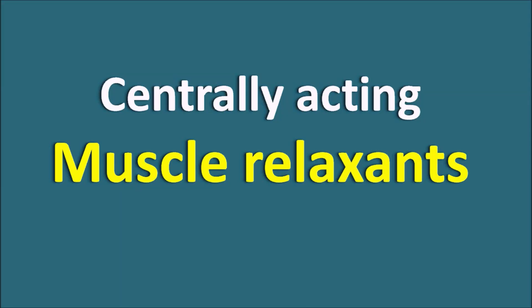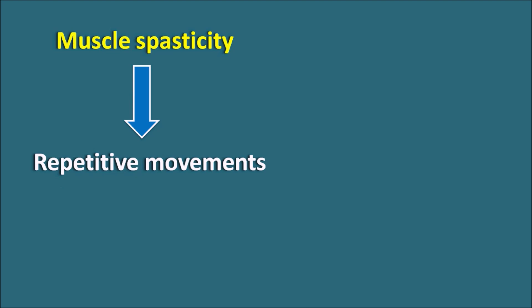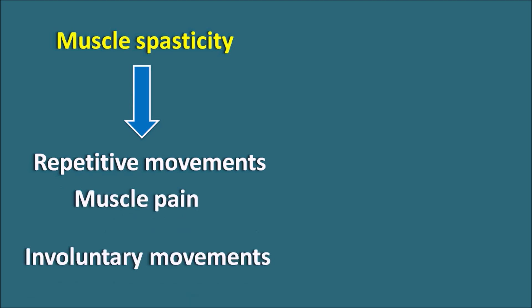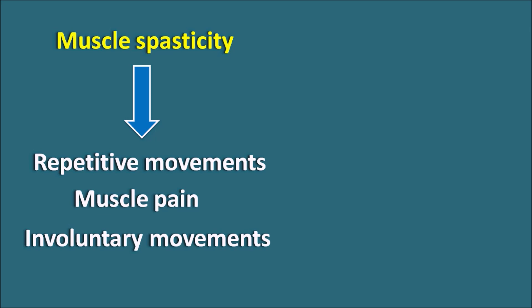Today we are going to discuss centrally acting muscle relaxants. Muscle spasticity is a condition where there is increased repetitive muscle movements, along with increased muscle pain and involuntary movements. Sometimes it may also be associated with immobility. These symptoms are associated with muscle spasticity, and this condition can be observed with disorders like multiple sclerosis.